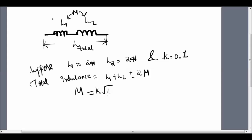Substituting the values for K, L1, and L2, we get the value of M as 0.2 Henrys. Now the total inductance is given by 2 plus 2 plus or minus 0.4, which is 4.4 or 3.6 Henrys.